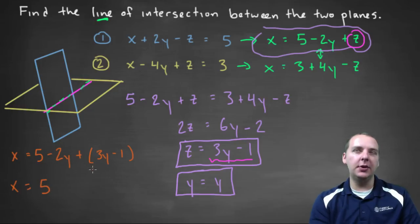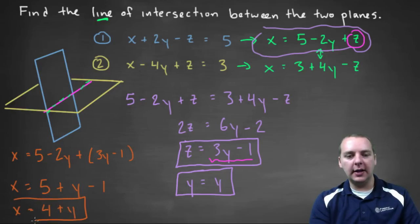Clean that up a little bit, and we'll get five, let's see, minus two y plus three y, makes x plus one y, minus one. So x would be equal to four plus y. So there you go, I'll box that guy in as well.